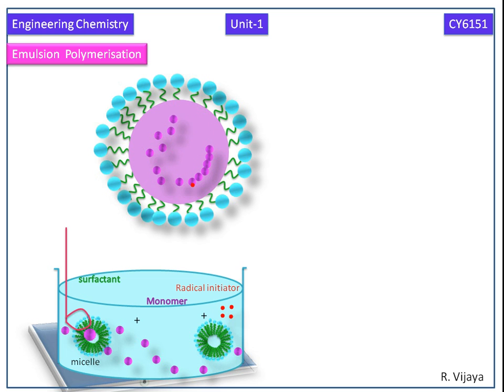That is, a number of monomers combine to give the growing polymer chain radical. Now all the monomers are converted into polymer chain radicals.